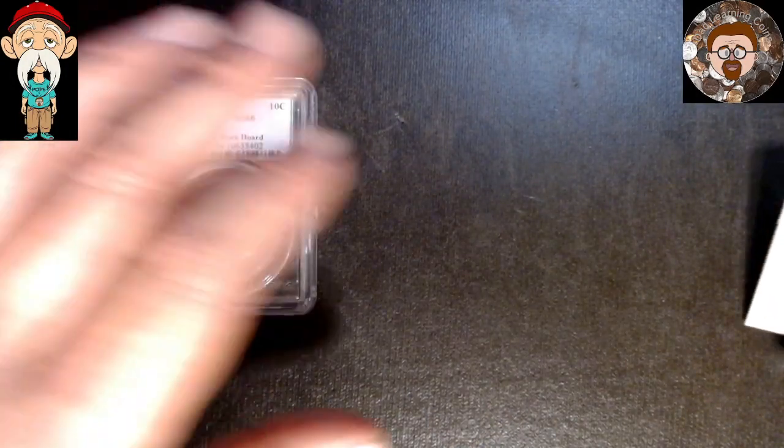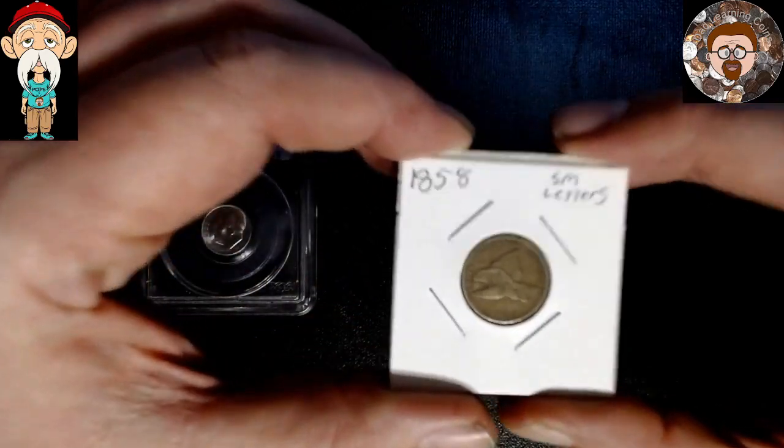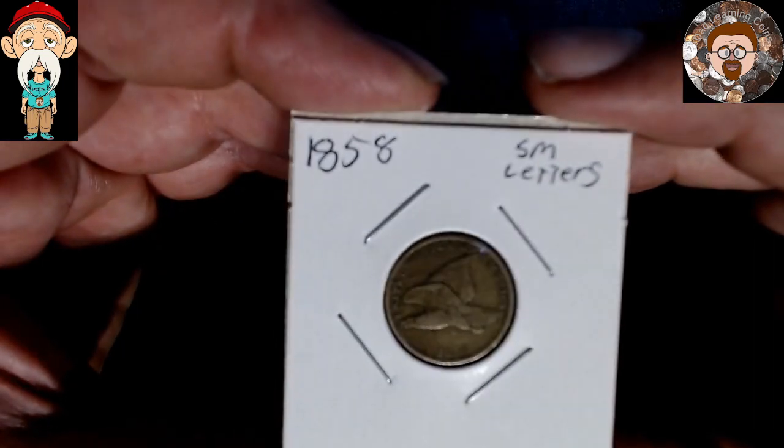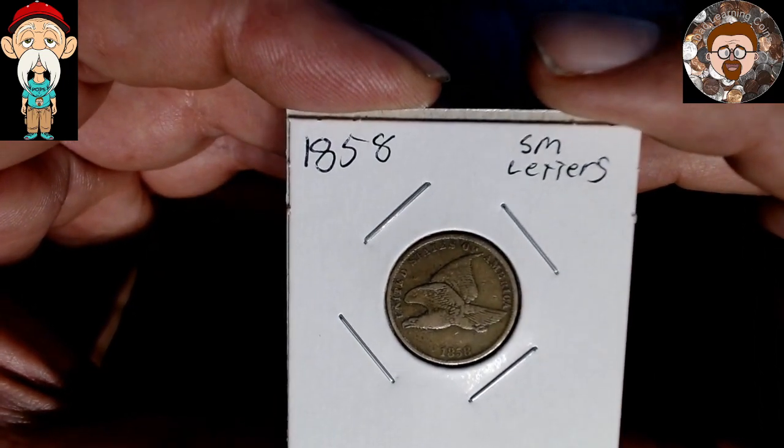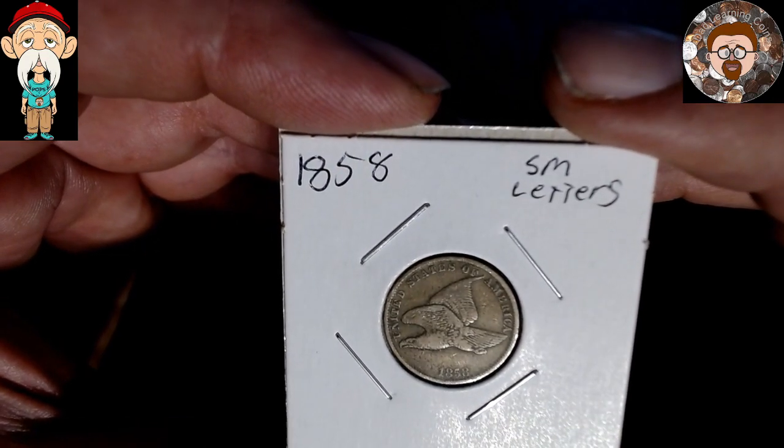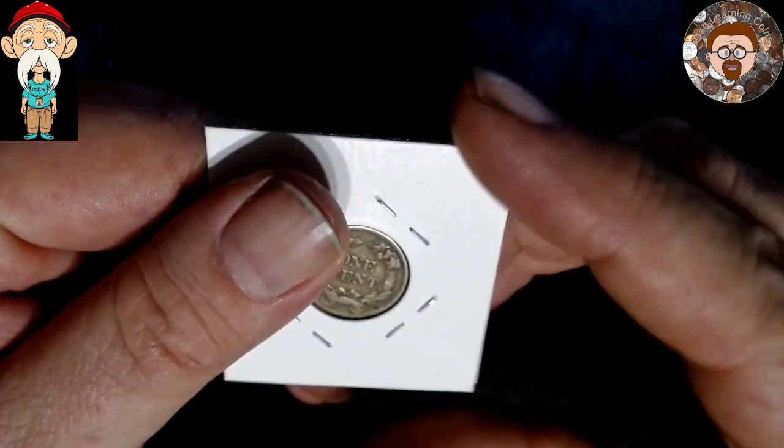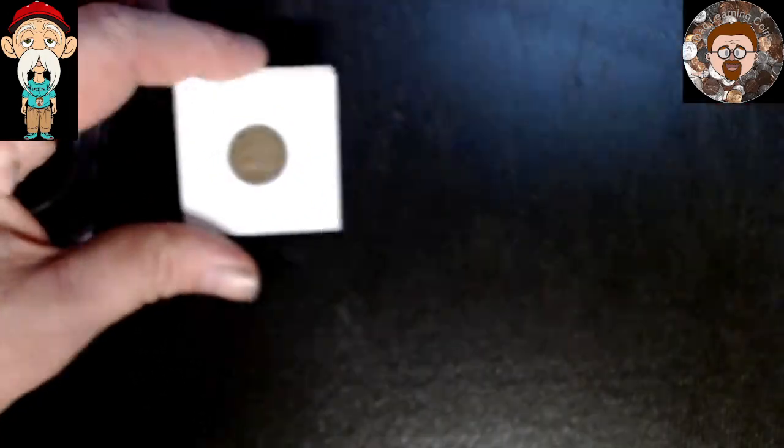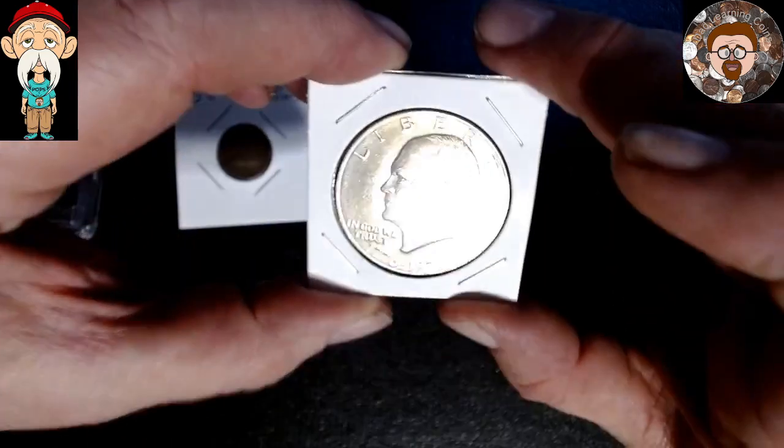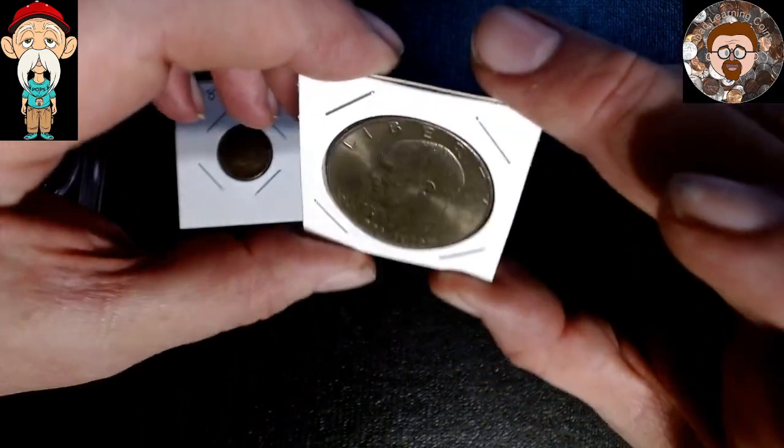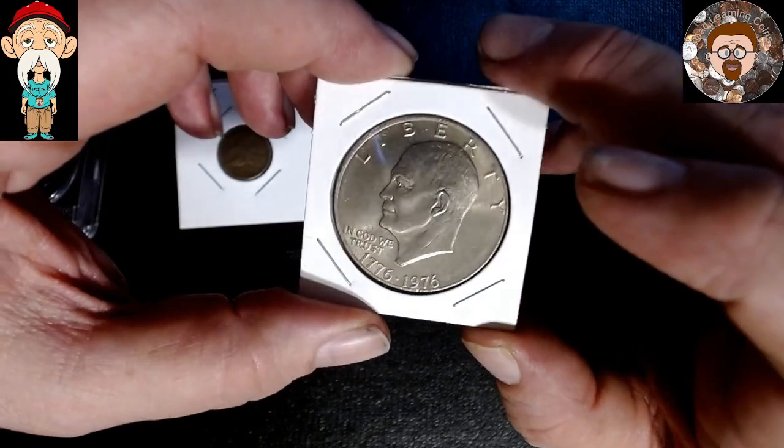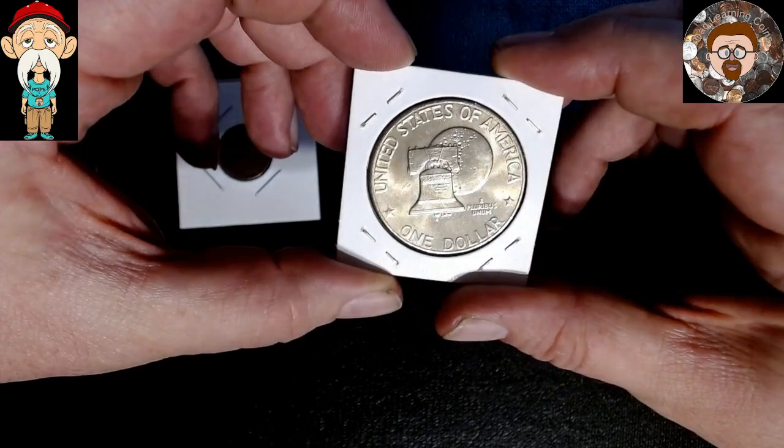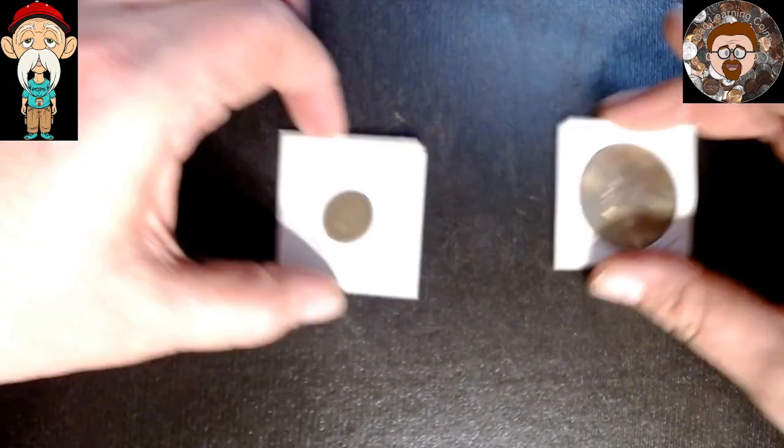We'll set him right there. We're going to have a 1858 small letters flying eagle. And an Eisenhower dollar, it does have a goldish tone to it. I like Eisenhower dollars, bicentennial.